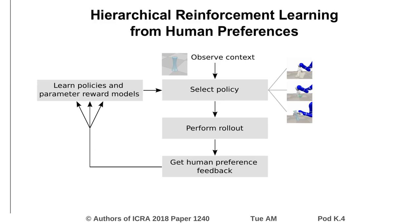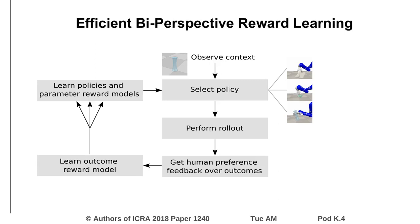Unfortunately, the parameter space of the robot can be high-dimensional, so learning a reward model is slow. We instead propose a novel bi-perspective reward learning scheme, where we first learn a reward model based on preference feedback over outcomes of rollouts. This outcome reward model is then used to improve the policies and reward models defined over the parameter space of the robot.